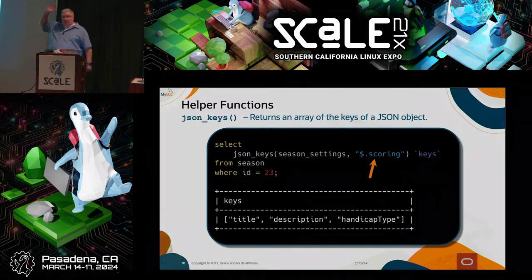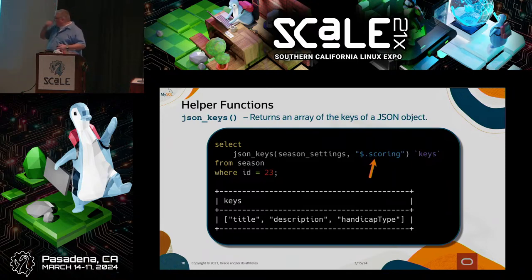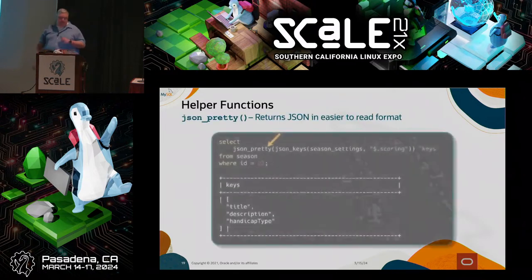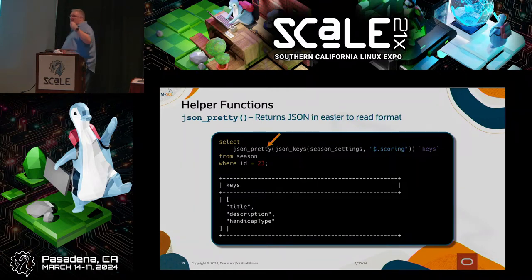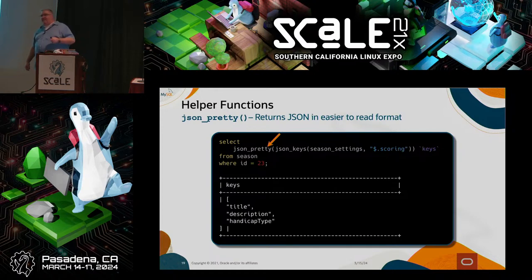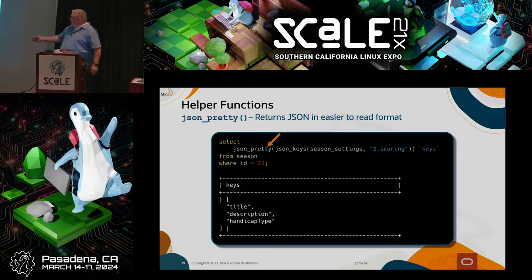Here we're looking for the scoring property off the root, and it returns just the three keys: title, description, and handicap_type. Now, JSON_PRETTY is a function you should only ever use when debugging or in development. Never use JSON_PRETTY in production because it puts line breaks in the return — instead of one long array, you get them broken down so it's easier to read in the console.